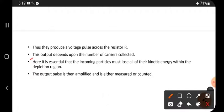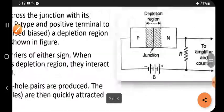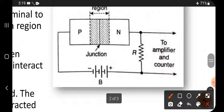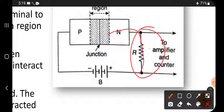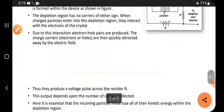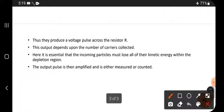Thus, this output depends upon the number of carriers collected. The output is here where R is. When an electron is coming, it produces one pulse. This pulse appears at the output side.